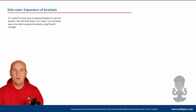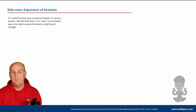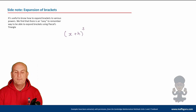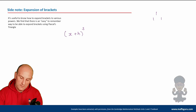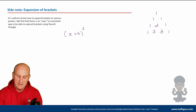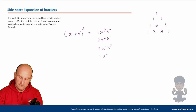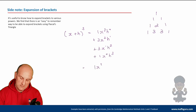A side note on expansion of brackets: if you have something like (x + H)³, you'd use Pascal's triangle — 1, 3, 3, 1 — as coefficients. That gives x³ + 3x²H + 3xH² + H³. This is taught later in the year but is very useful here for expanding cubic brackets quickly without repeated binomial multiplication.